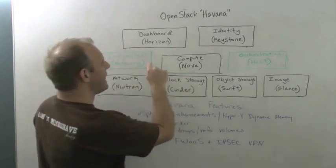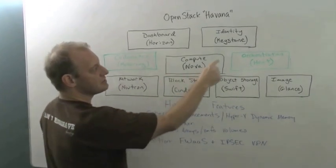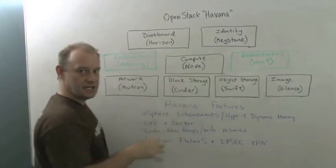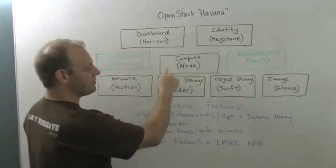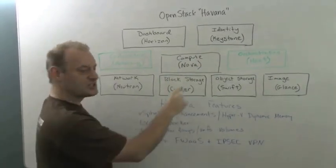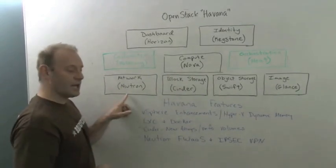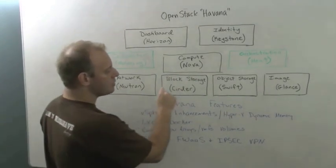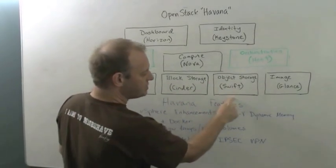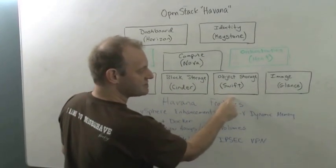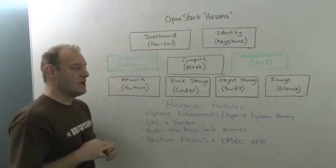In the Grizzly release, we have in black here the dashboard, which is Project Horizon. Identity, or authentication, which is Keystone. Then you have your compute, which is known as Project Nova. Your network, which is now named Neutron. Your block storage, which is Cinder. Your object storage, which is Swift. And your image service, which is Glance.